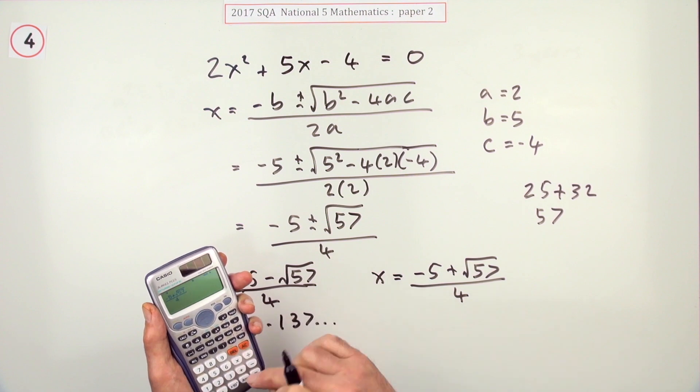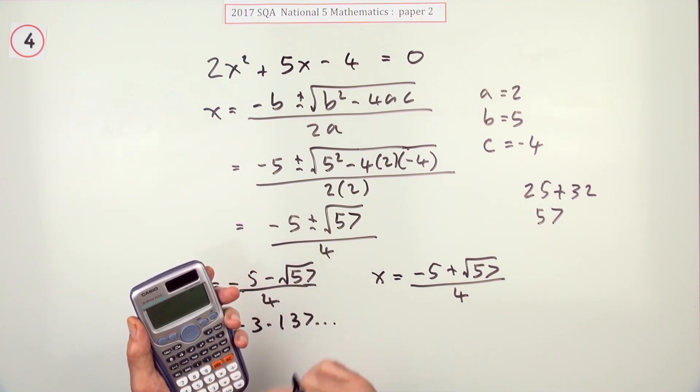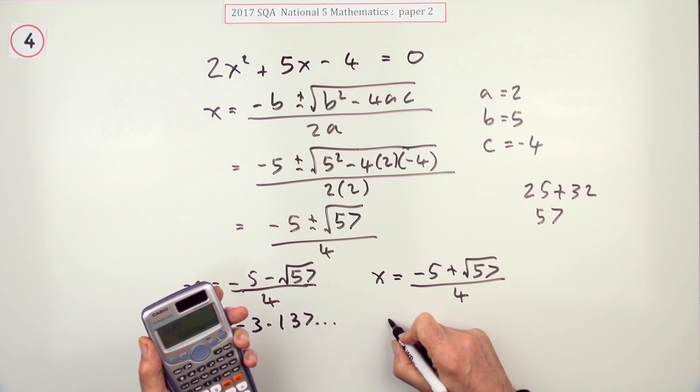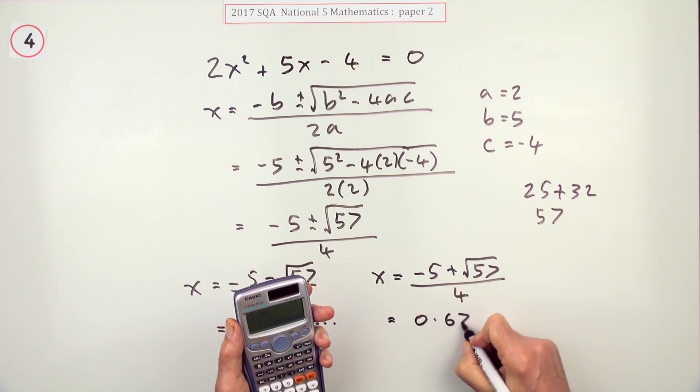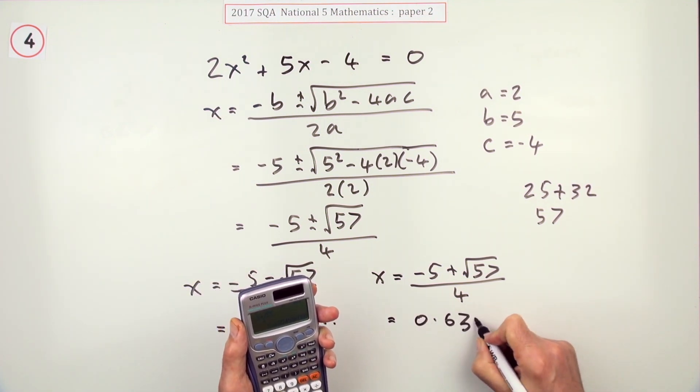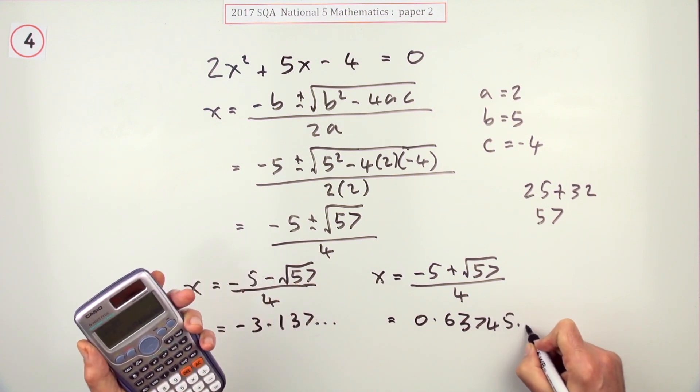Sometimes it's just as fast with fiddling about with everything. That gives you 0.6374... and so on.